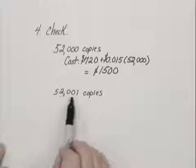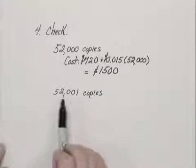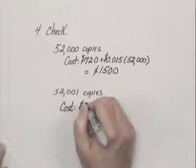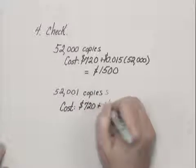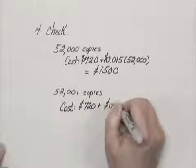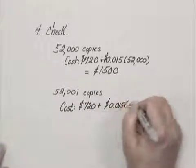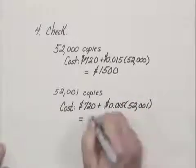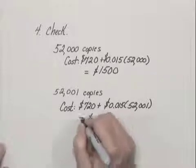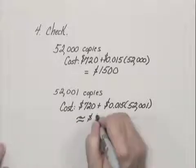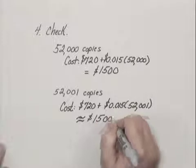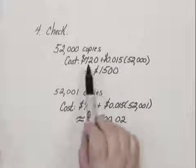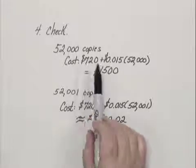What about if we make just a little bit more than 52,000, say 52,001 copies? Well then that cost would be the $720 plus $0.015 times 52,001, which is approximately, if we round to the nearest penny, $1,500 and 2 cents, so just a little bit too much. So we can make 52,000 copies or fewer.